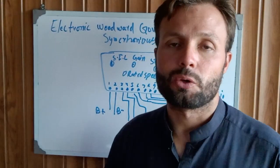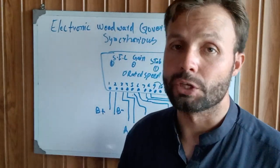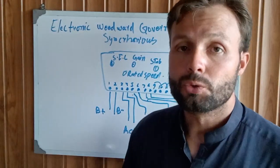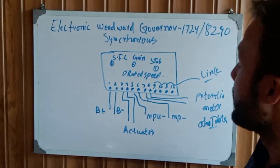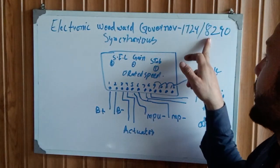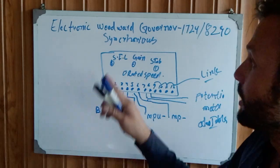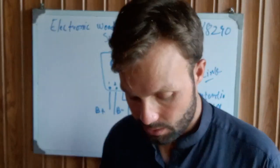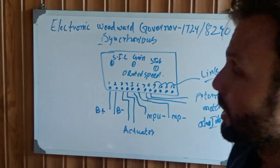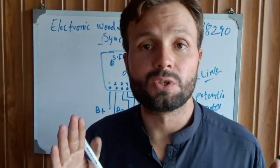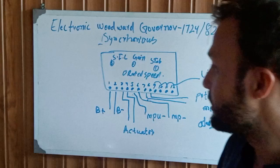Hi and assalamu alaikum, welcome back to Technology Information Channel. Today we are going to explain the electronic Woodward Governor 8290 model synchronous isochronous. This governor controls the generator fuel system.